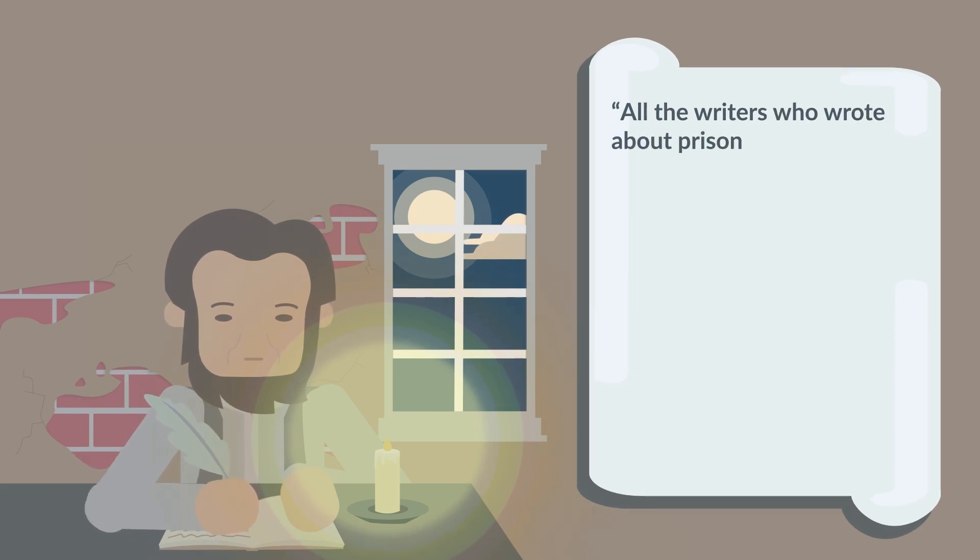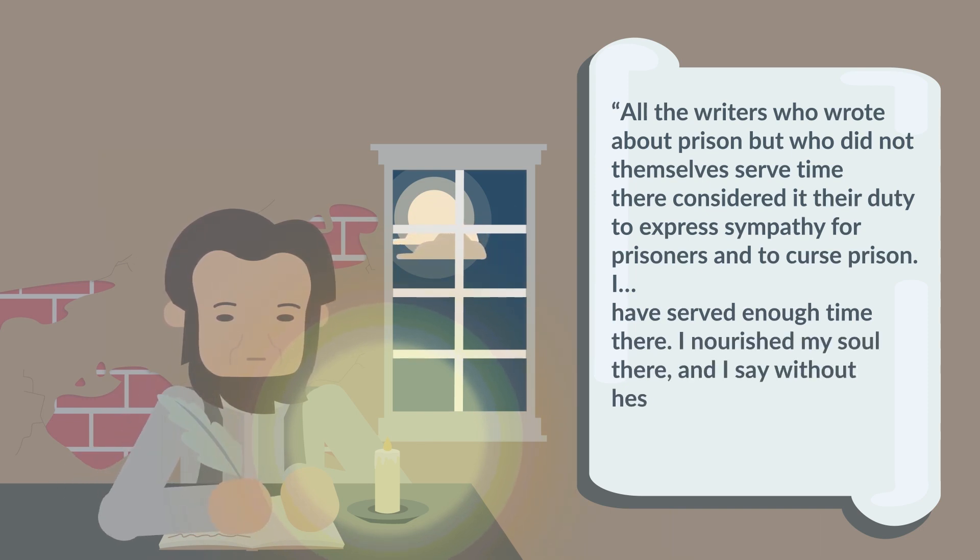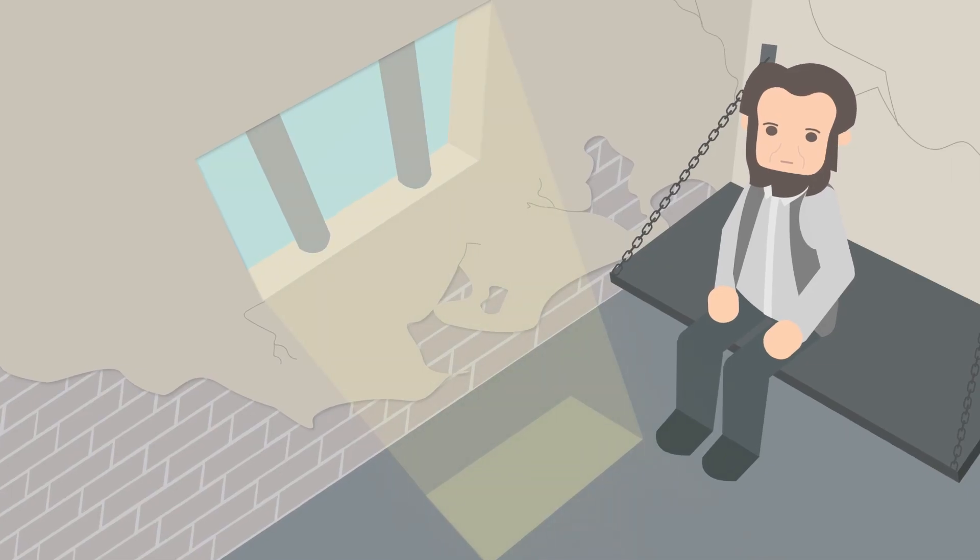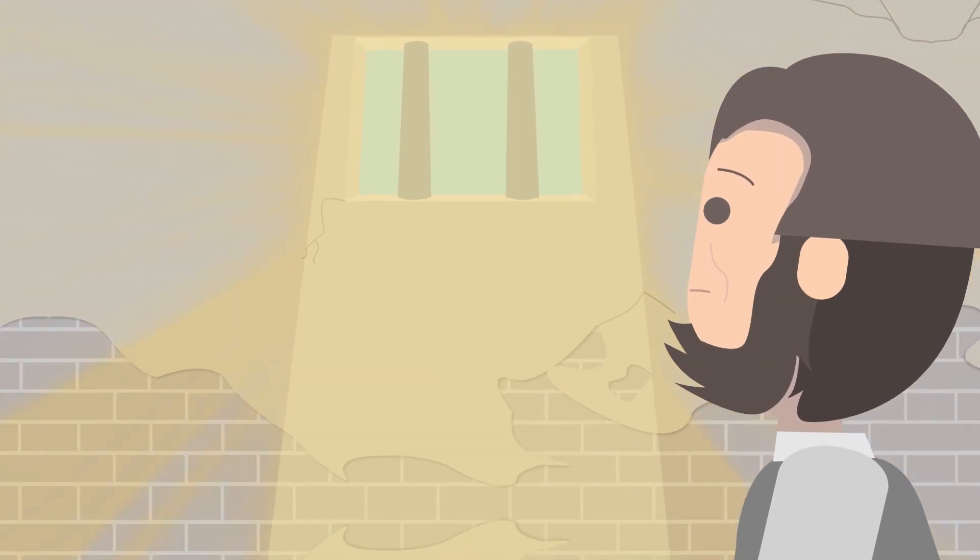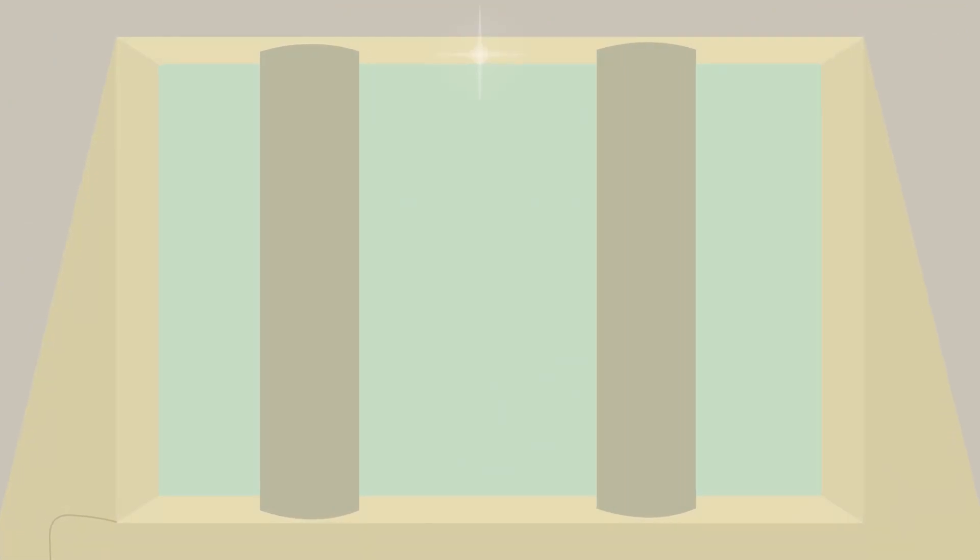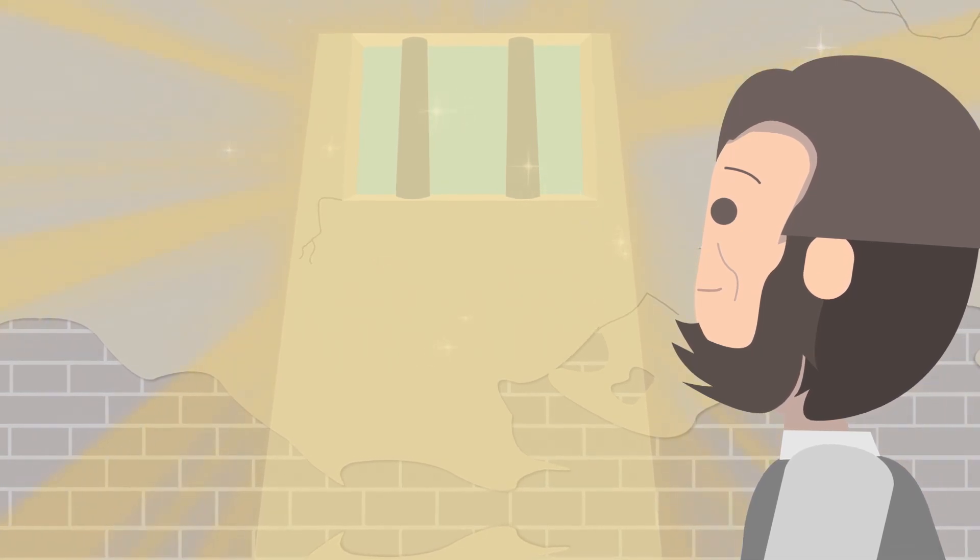He wrote: All the writers who wrote about prison but who did not themselves serve time there considered it their duty to express sympathy for prisoners and to curse prison. I have served enough time there. I nourished my soul there, and I say without hesitation, bless you prison for having been in my life. Because he took total responsibility for the outcomes of his life, he grew in prison. He said he nourished his soul there. He adopted an internal locus of control and took complete responsibility for his life. And as a result, he became empowered. He took what could have been one of the worst situations in his life and made it the best.